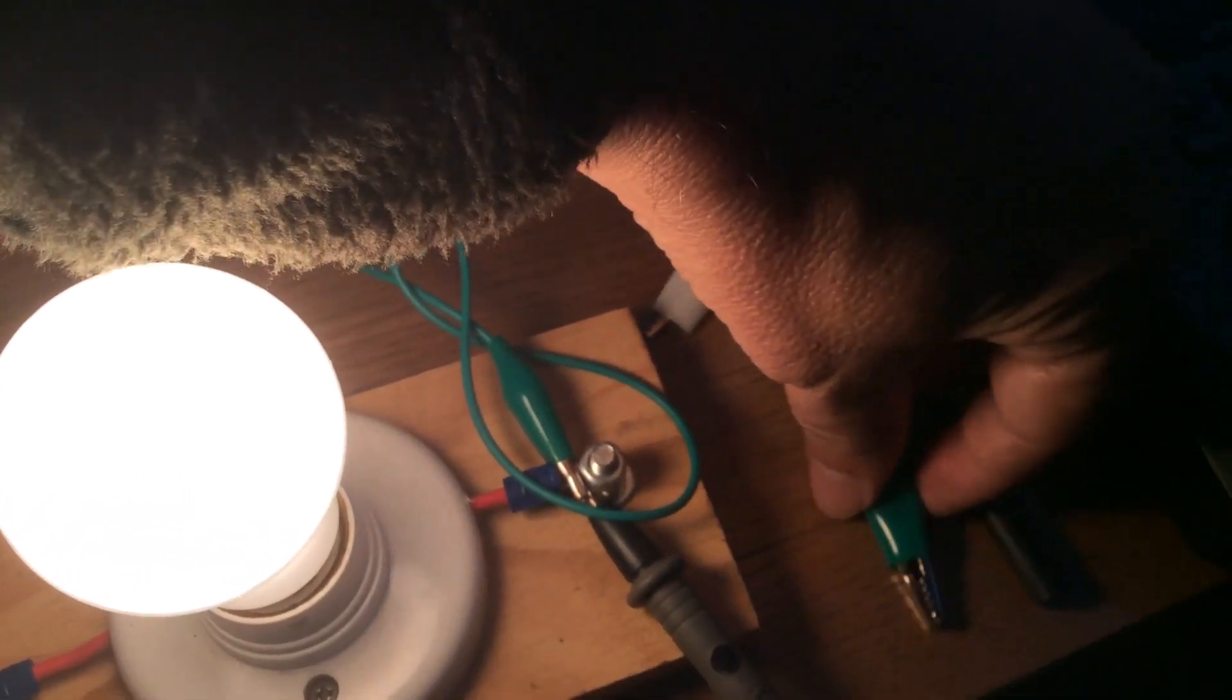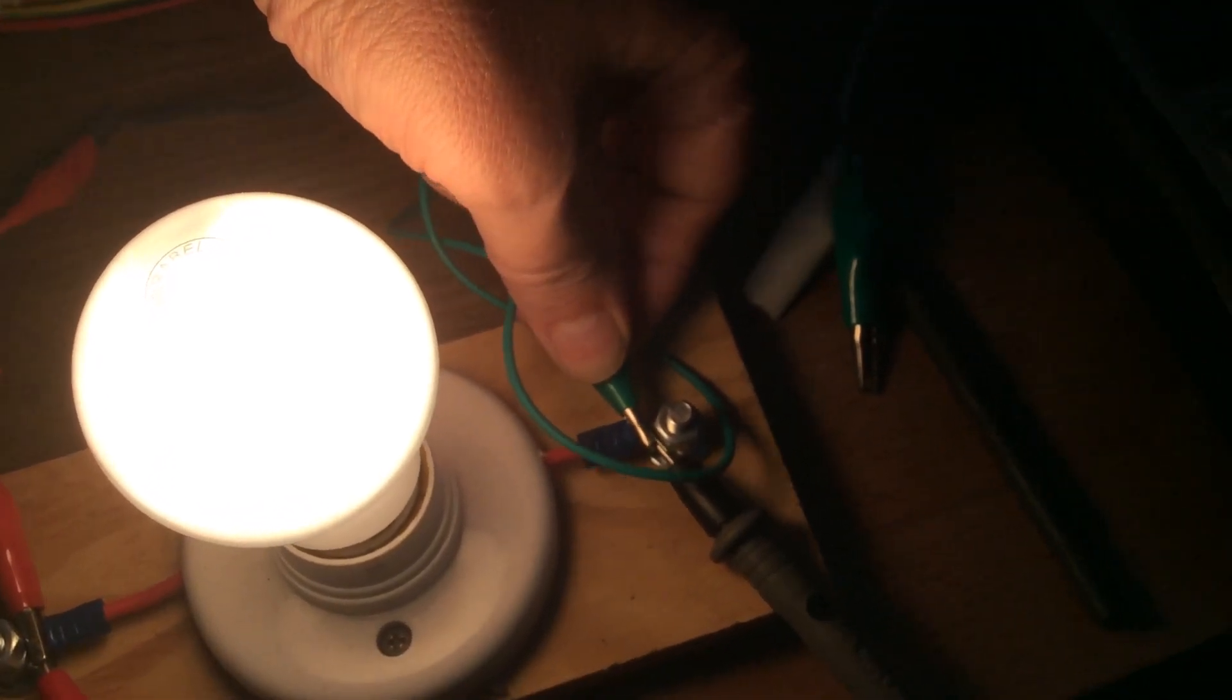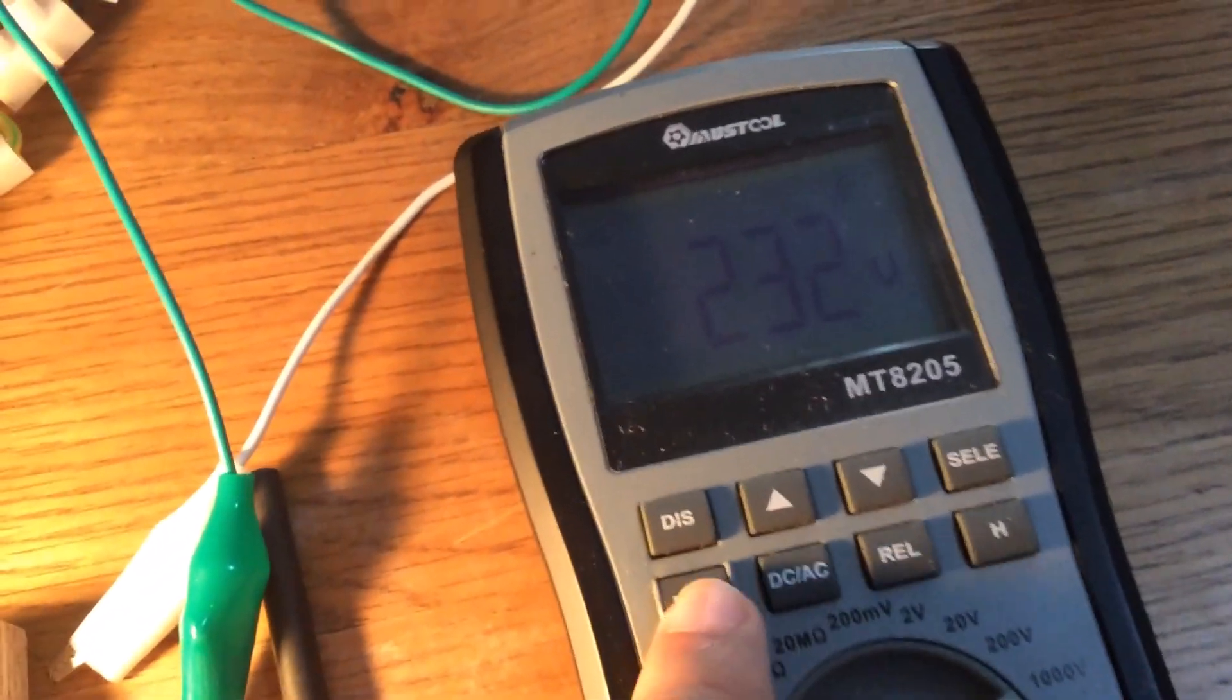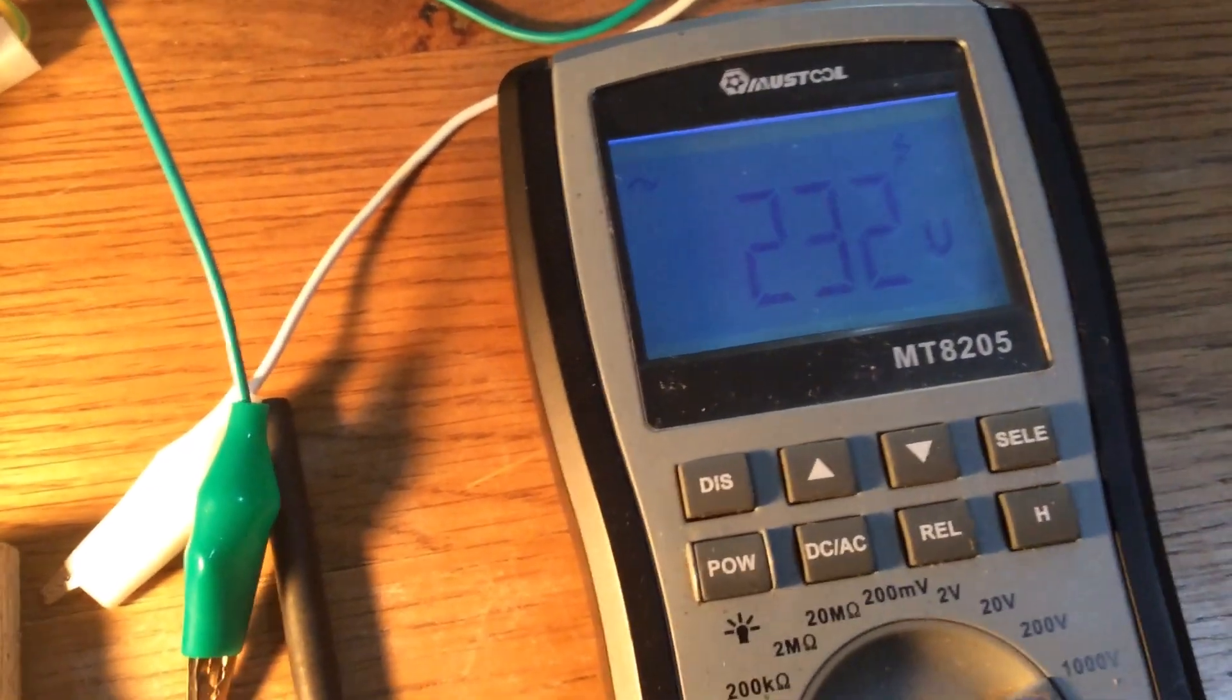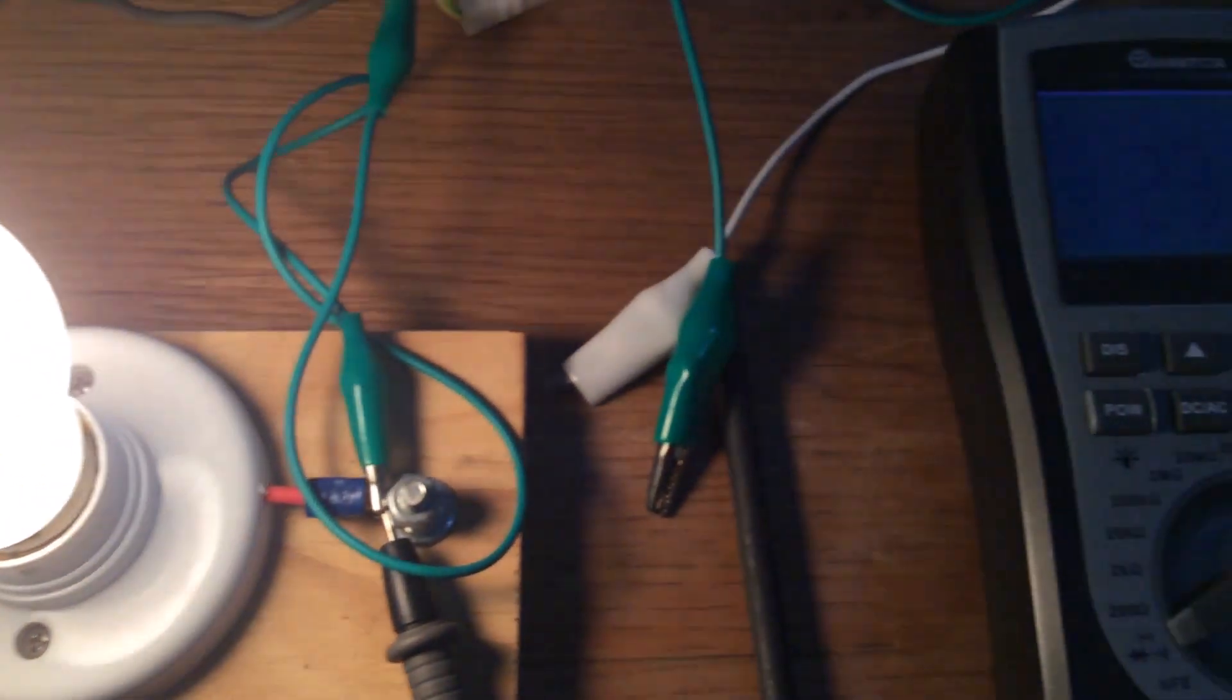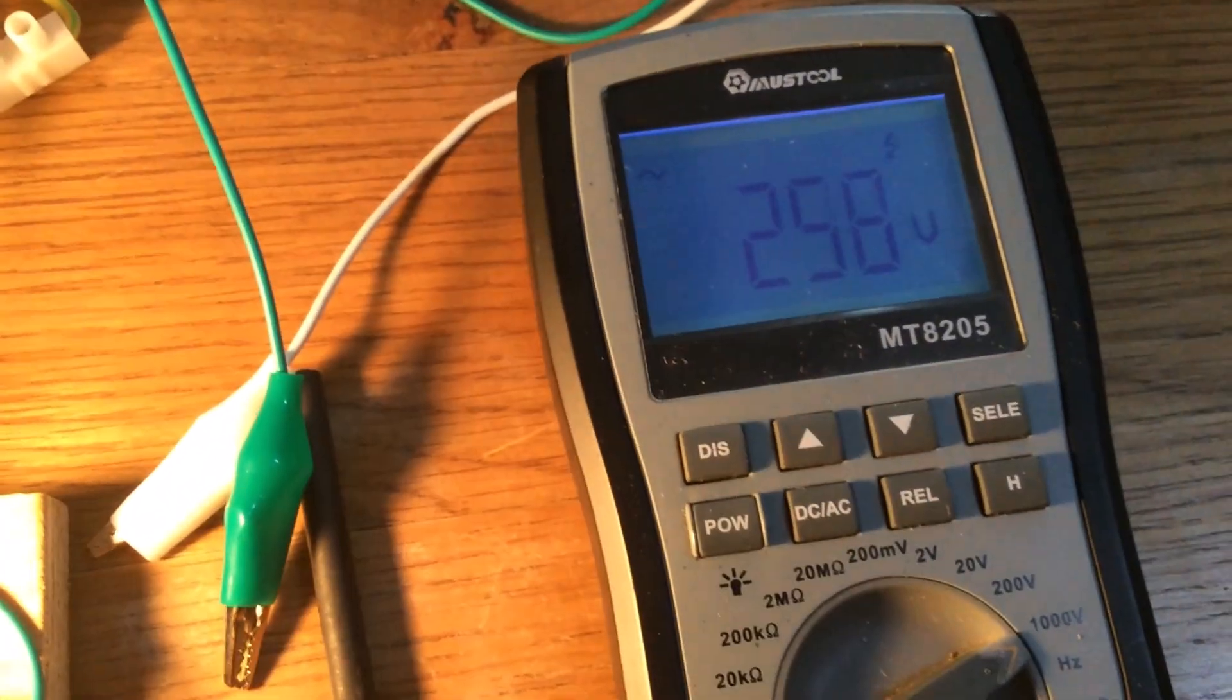So we'll apply power to the heating element. Just before I do that, so that's putting out 232 volts AC whilst running that light.